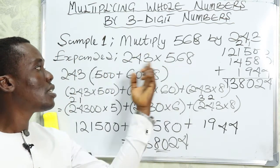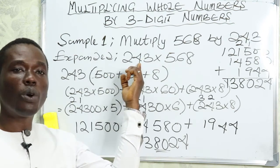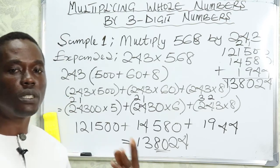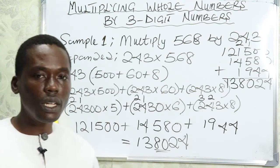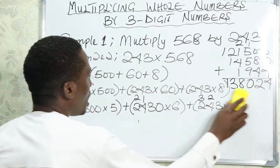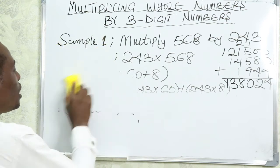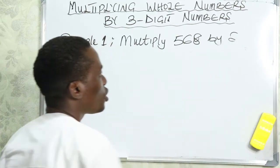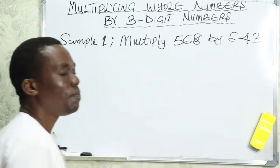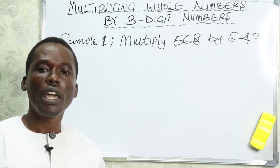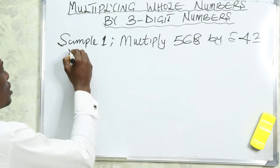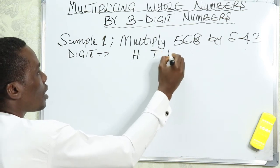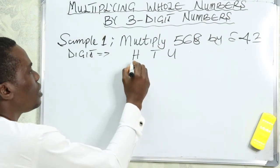You can also do it the other way, with 568 multiplying 200, 40, and 3. That is how you use the expanded form method in solving multiplication of whole numbers with three-digit numbers. Now let's look at the next method — the digit form method. When using the digit form method, you place these numbers in their various place values: hundreds, tens, and units.